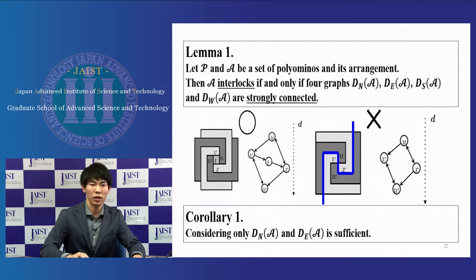We note that the definitions are symmetric with respect to the pair of directions SN and EW. Therefore, when we reverse all edges in DNA, we can obtain DSA and so DEA and DWA. This implies that corollary 1, considering only DNA and DEA are sufficient.